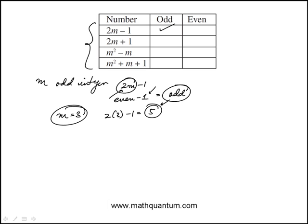Same thing for 2M plus 1. Again, 2M is even, plus 1 is odd, so the result is odd. You can also do M is 3: 2 times 3 plus 1, 6 plus 1 is 7.